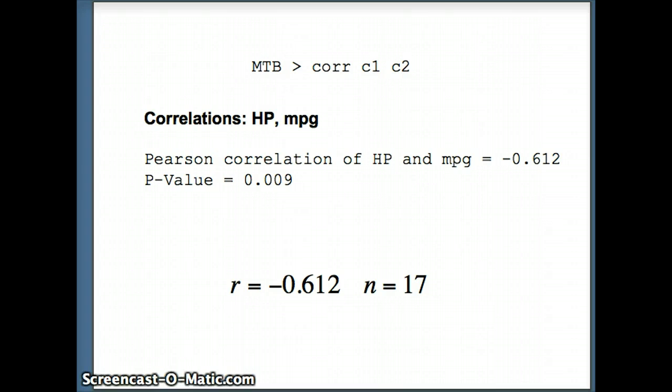The p-value that Minitab will give you will be a two-tailed p-value. In this situation, we're doing a one-tailed test, so our p-value is just 0.0045.